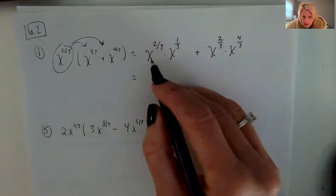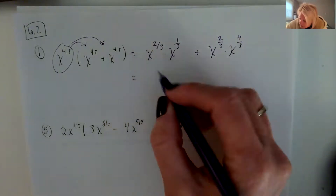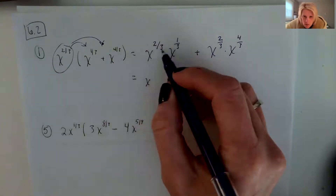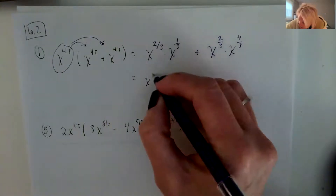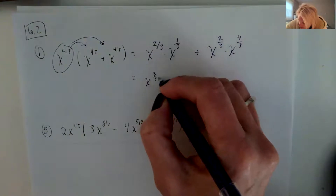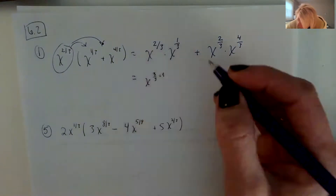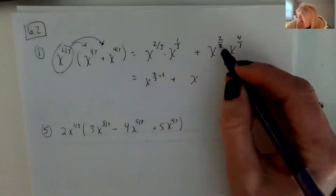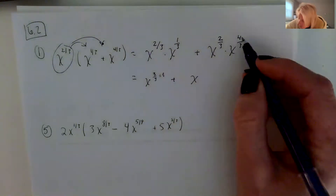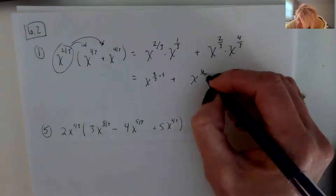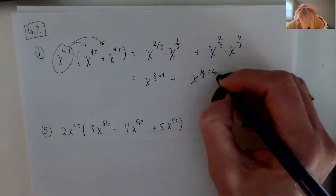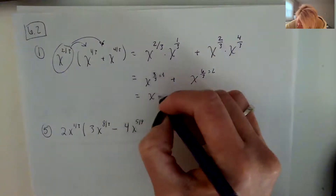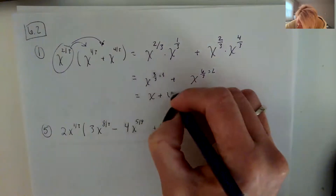Because they're like bases — these are both x's — we can add their exponents. So 2/3 plus 1/3 is 3/3, which is 1. Over here with like bases, we can also add their exponents: 2 plus 4 is 6/3, which equals 2. So we end up with x plus x squared.